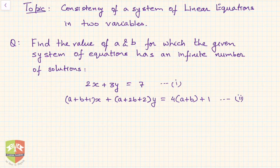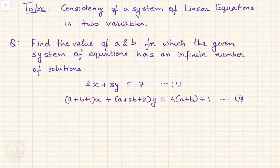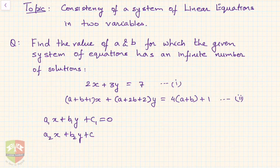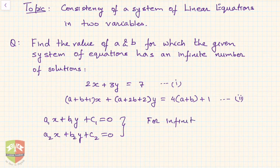Consistency means whether the given system of linear equations has a unique solution, infinitely many solutions, or no solution — three conditions. In this case, we are asked for infinite number of solutions. For a pair of linear equations a1x + b1y + c1 = 0 and a2x + b2y + c2 = 0, infinite solutions also means the lines are coincident.